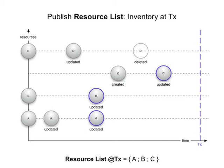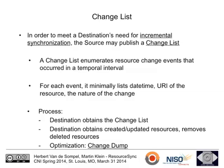To illustrate with our scenario: at time X, the source publishes a resource list. What goes into that list is the state of its resources at time X. In our example with resources A, B, C, and a deleted one: the resource list contains the three current URIs — not the deleted one, because you don't list deleted resources in an inventory.